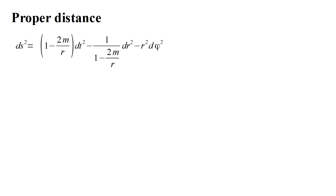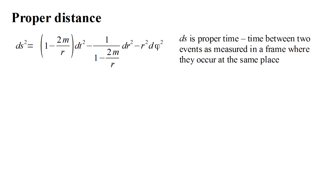Back to the Schwarzschild metric. We've discussed the proper time ds, the time between two events as measured in a frame where they occur at the same place.